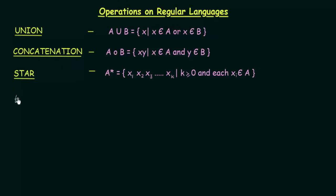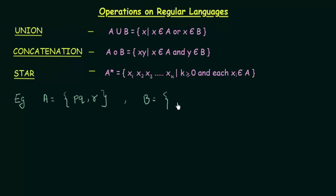Let's take an example. I have two sets A and B, where A equals the set containing elements P, Q, and R. Set B contains the elements T, U, and V. Let's perform Union, Concatenation, and Star on these two sets. First, let's perform Union.